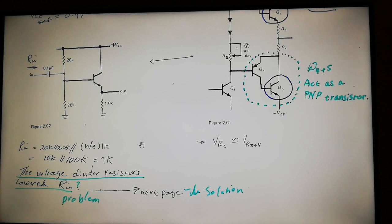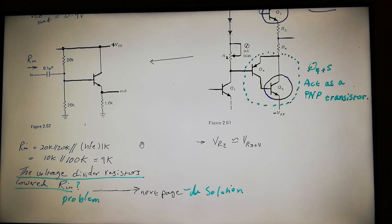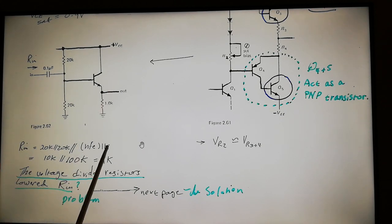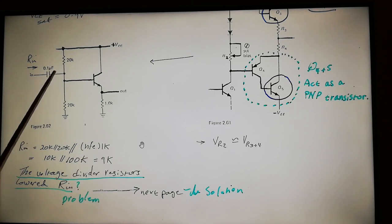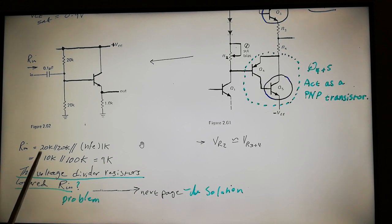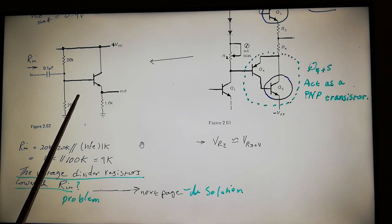Those two 20k resistors are killing the input resistance of the whole stage — the 9k is mostly affected by those two. So we need to do something about that, and the idea is to make a bootstrapping configuration to increase that input resistance.